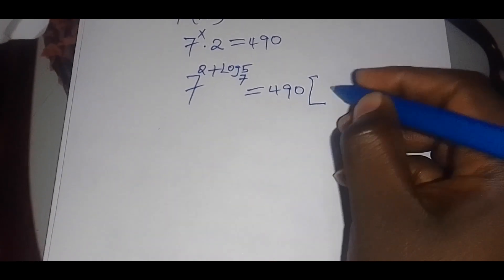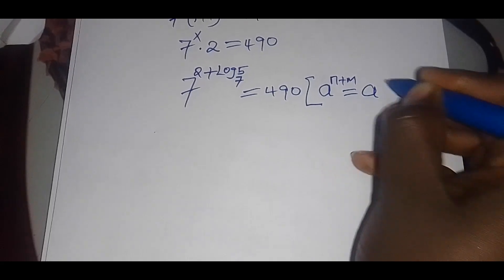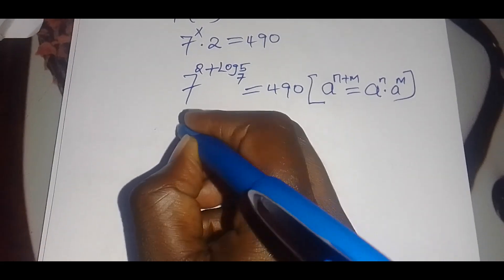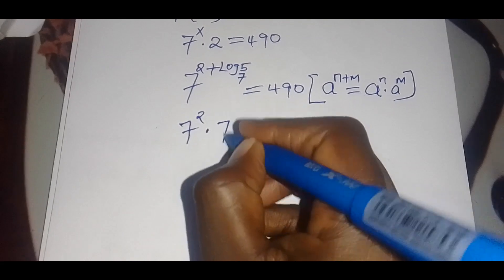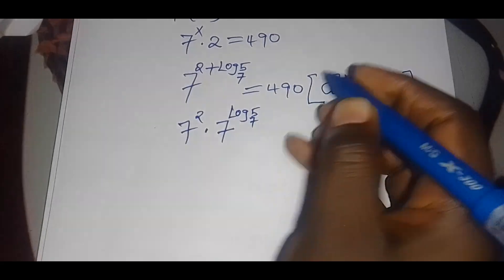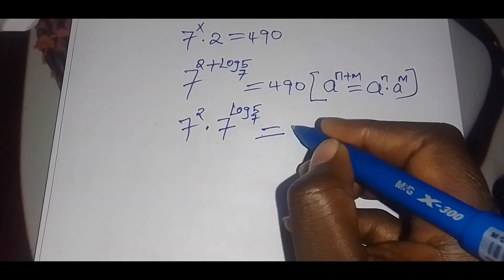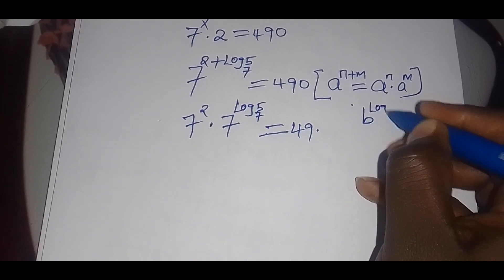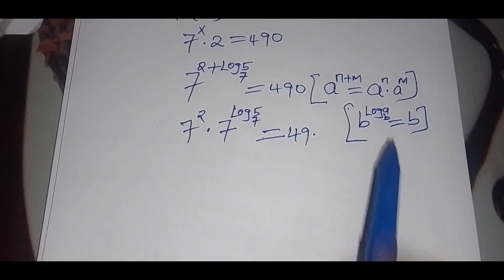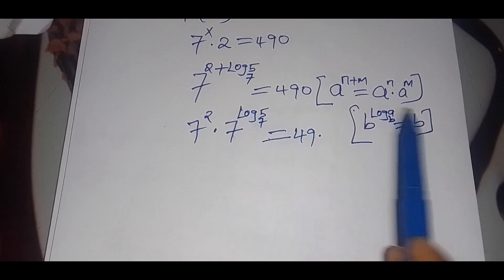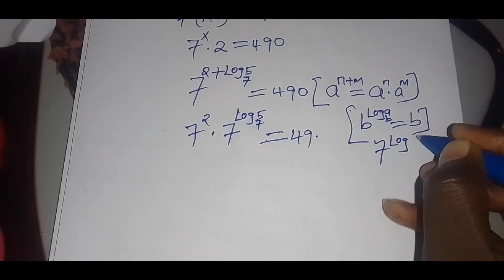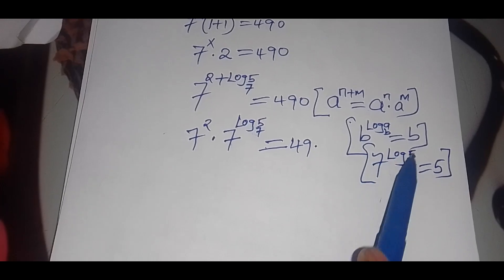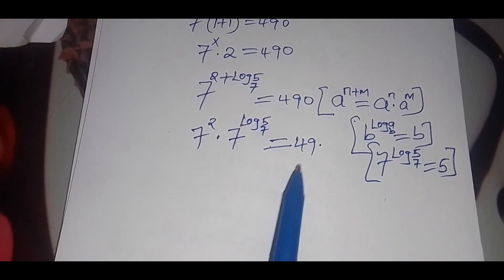Applying the indices identity that a raised to power (n plus m) can be expressed as a raised to power n multiplied by a raised to power m, we get 7 squared multiplied by 7 raised to power (log base 7 of 5). Now, 7 squared equals 49. And by the logarithm definition, b raised to power (log base b of a) equals a, so 7 raised to power (log₇5) equals 5.